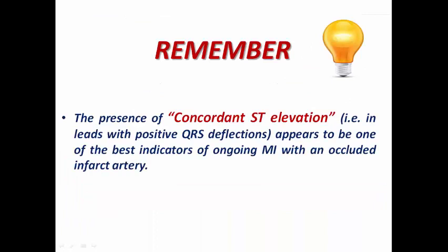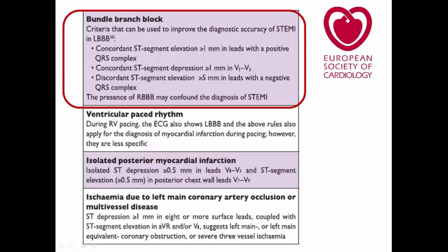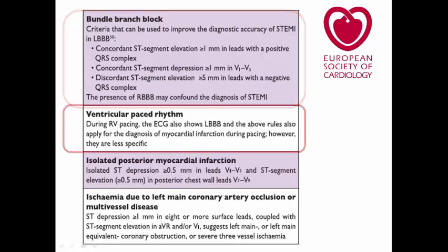The presence of concordant ST-elevation — in leads where the terminal deflection is positive — appears to be one of the best indicators of ongoing MI with an occluded infarct artery. Whenever I see left bundle branch block with concordant ST-elevation, most probably in V5 and V6, of more than one millimeter, it is very suggestive of myocardial infarction and STEMI, and we need to go for primary PCI. The Sgarbossa criteria are included in the ESC STEMI guidelines to help differentiate acute from chronic left bundle branch block.